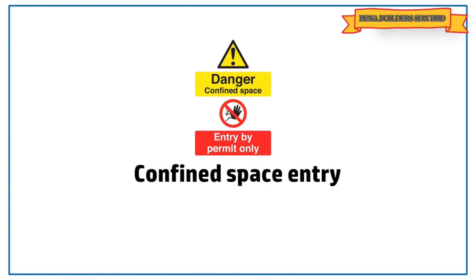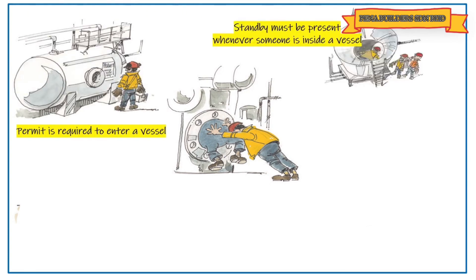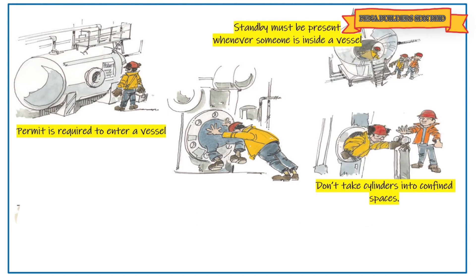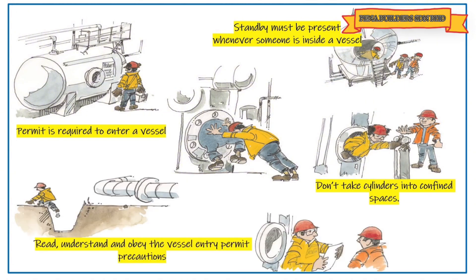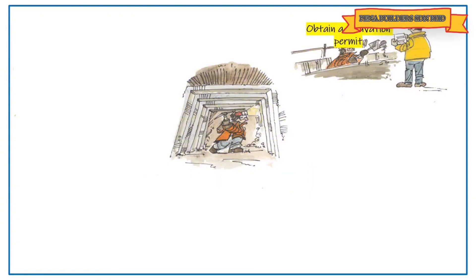Confined space entry: a permit is required to enter a vessel or confined space. A standby person must be present whenever someone is inside the vessel. Do not take gas cylinders into confined spaces. Remove gas hoses before breaks. Read, understand, and obey the vessel entry permit precautions.